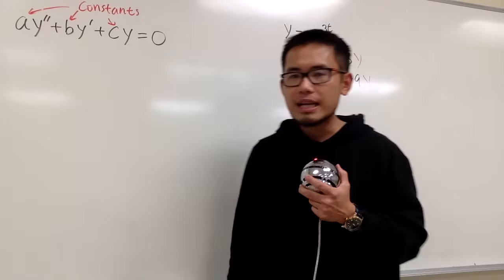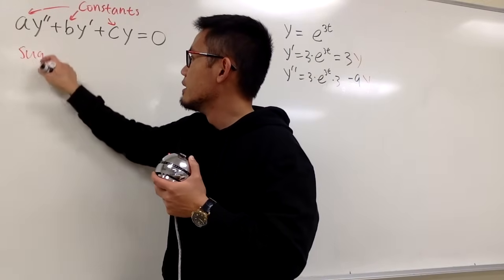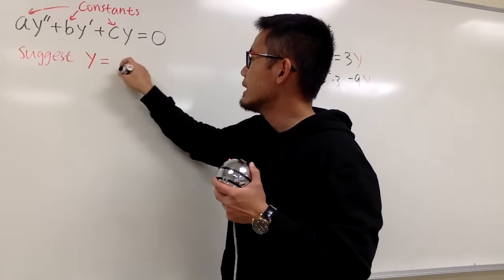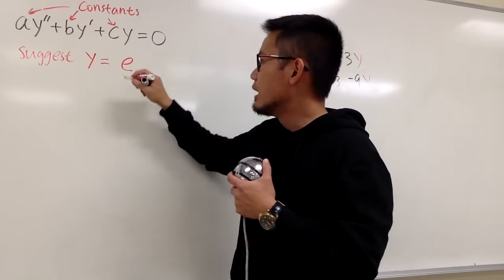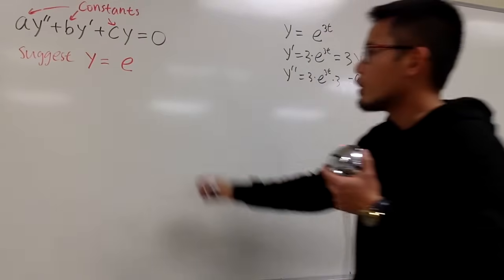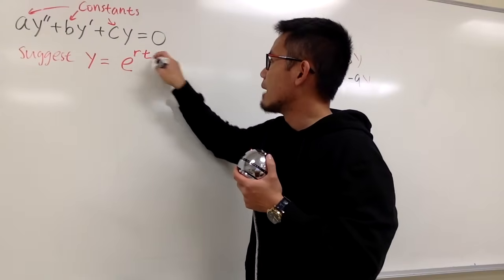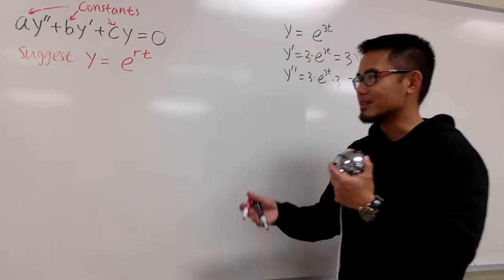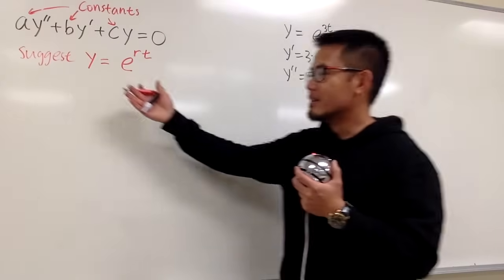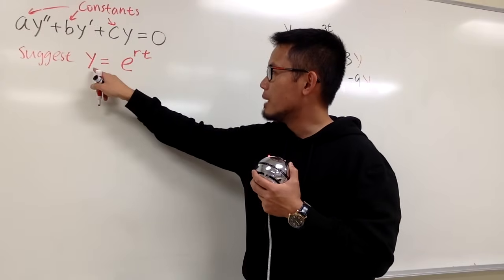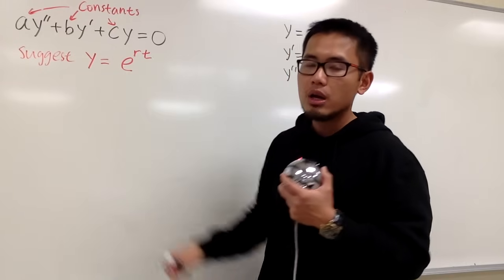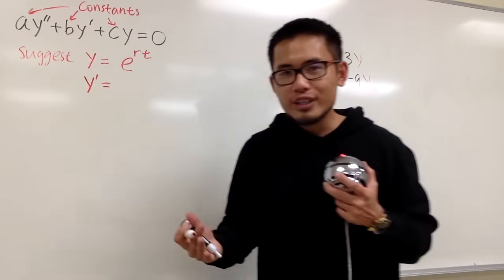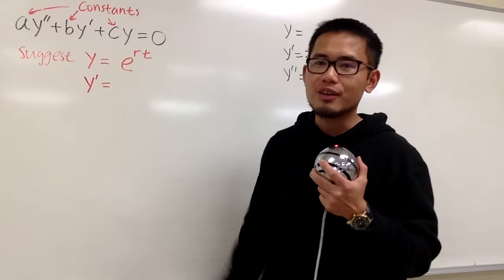This suggests that for the function, we should have the form y equals e to the rt. I don't know what r should be — earlier I just used 3 — so in general, r times t. For the second-order situation we usually use t, because there are many applications that involve time. So we begin by saying y equals e to the rt, then differentiate twice and plug in, hoping to squeeze out conditions that help us solve this differential equation.